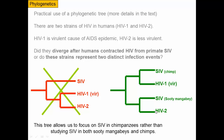So that tells us that if we're going to study SIV to help us understand HIV, we are better off studying the SIV that chimps get than the ones that sooty mangabeys get. With this tree, we know we can optimize our research by targeting that particular SIV. Phylogenies can be used for more than just showing how things are related — they can allow us to make predictions about what we should do in the future.